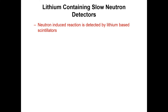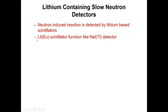In this kind of detector, we normally have a neutron-induced reaction which is detected by lithium-based scintillators. That is the basic principle of this kind of detector. The most popular material used in these detectors consists of lithium iodide scintillators, and the function of this kind of scintillator is like sodium iodide detectors.